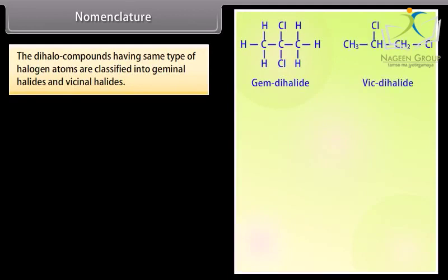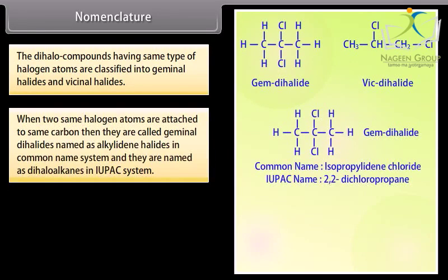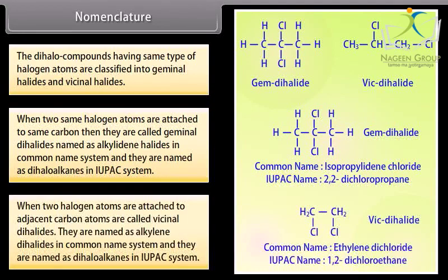Nomenclature. Dihalo compounds having the same type of halogen atoms are classified into geminal halides and vicinal halides. When two identical halogen atoms are attached to the same carbon, they are called geminal dihalides, named as alkylidene halides in the common name system and as dihaloalkanes in the IUPAC system. When two halogen atoms are attached to adjacent carbon atoms, they are called vicinal dihalides, named as alkylene dihalides in the common name system and as dihaloalkanes in the IUPAC system.